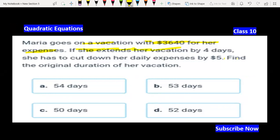If she extends her vacation by 4 days, she has to cut down her daily expenses by $5. Find the original duration of her vacation.